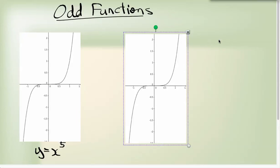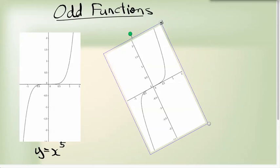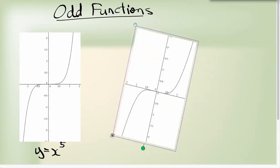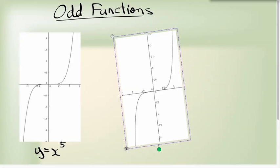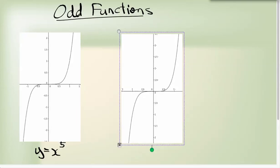So if I take this copy of it, and if I rotate it 180 degrees, it ends up being the exact same function. That means we have rotational symmetry. It has to go a full 180 degrees to be considered an odd function.